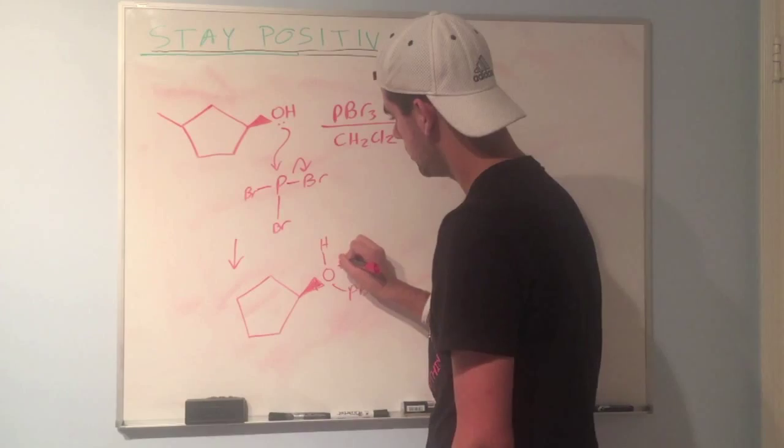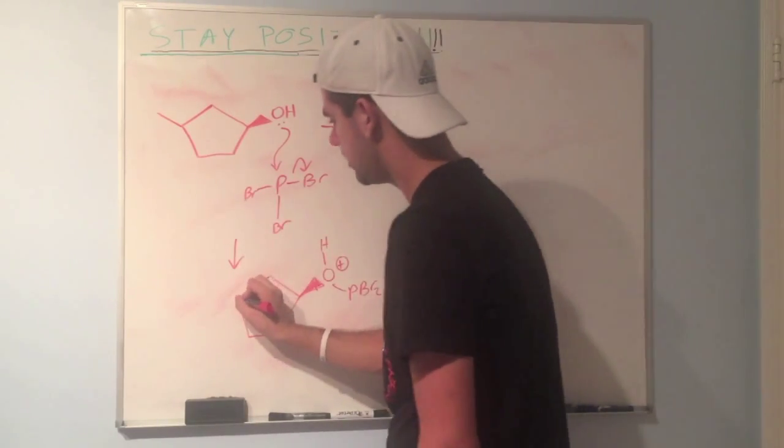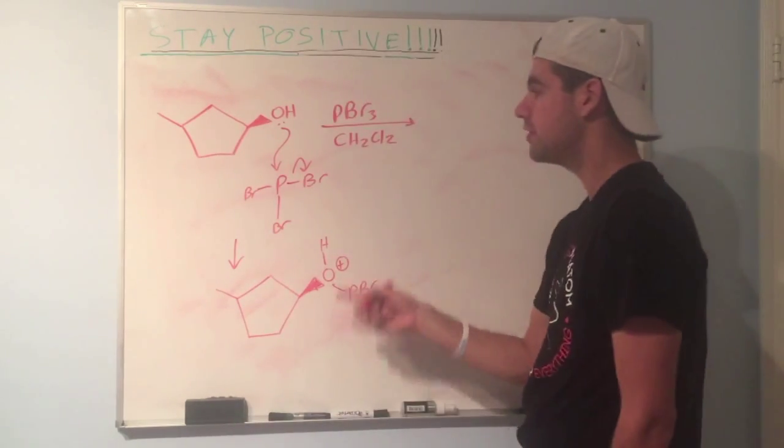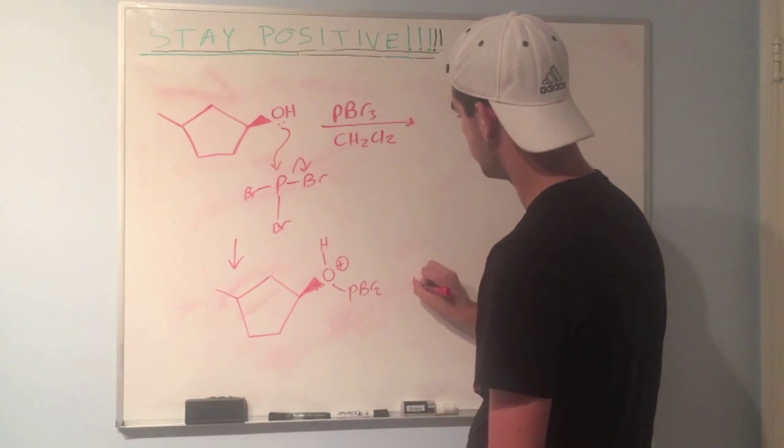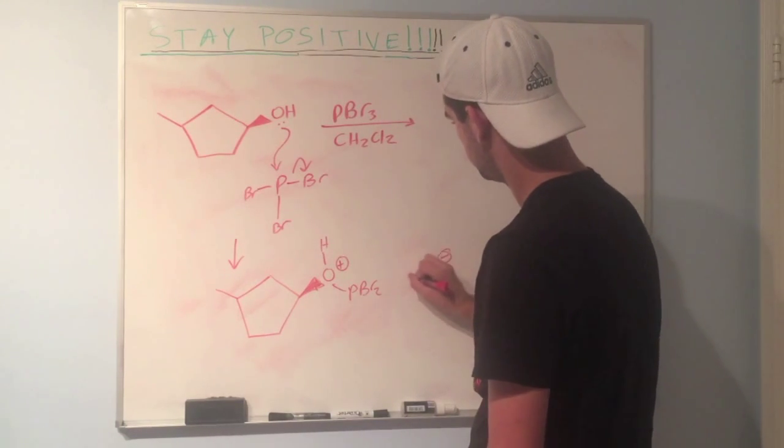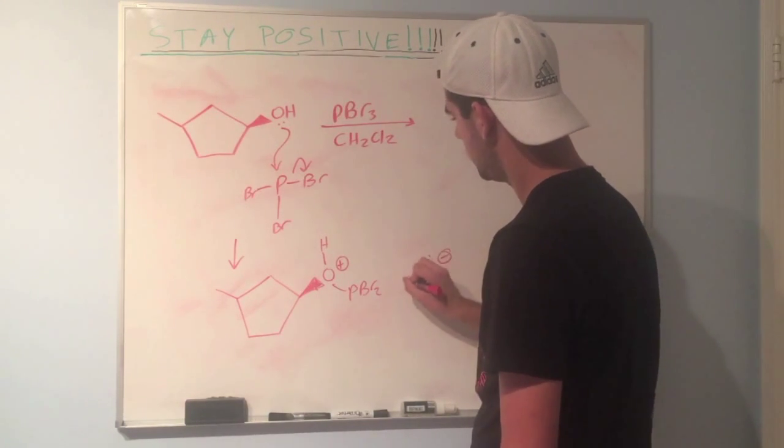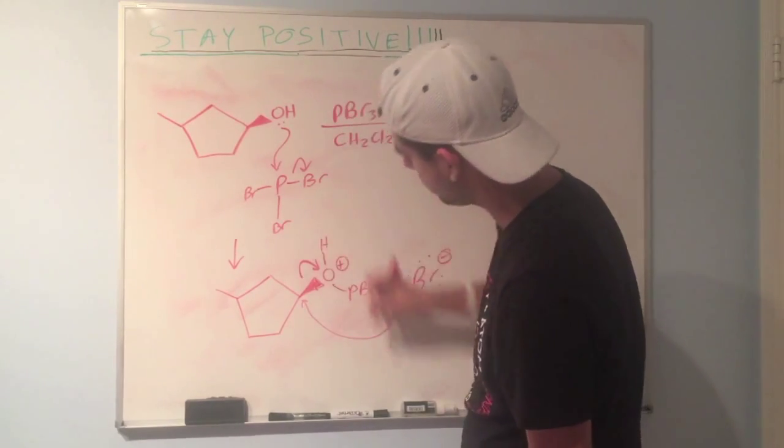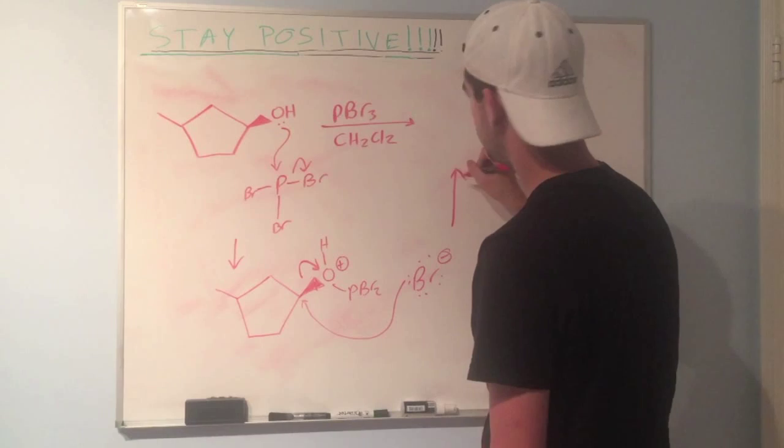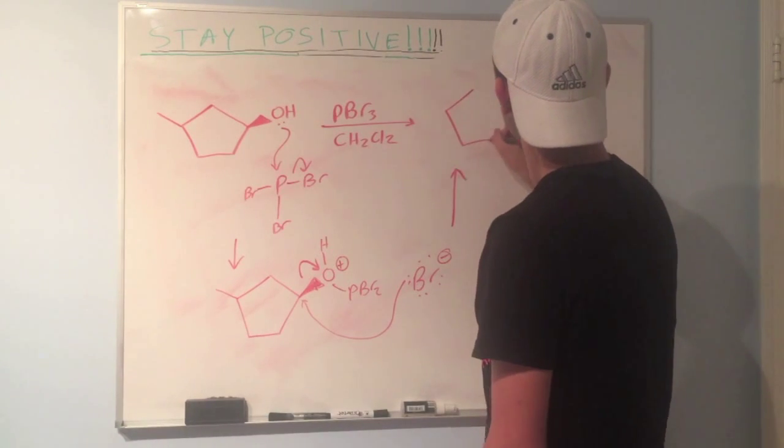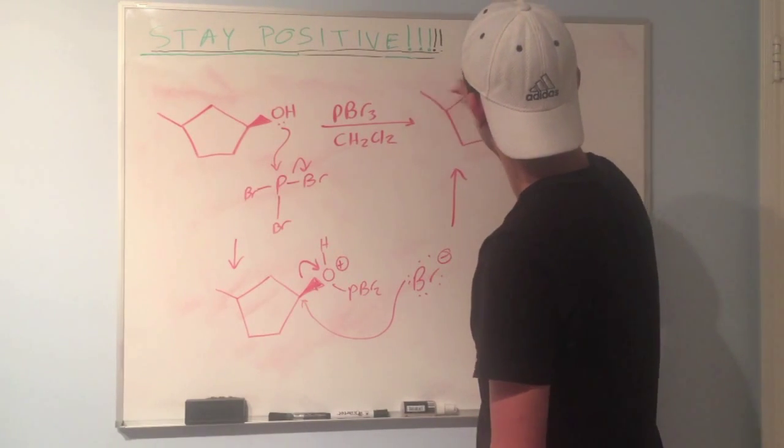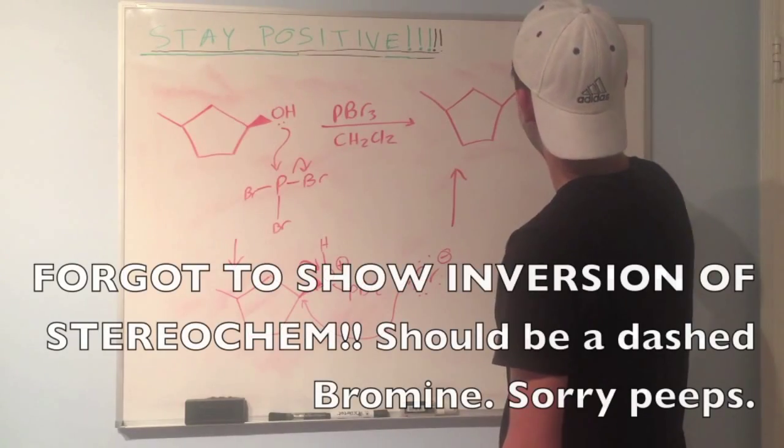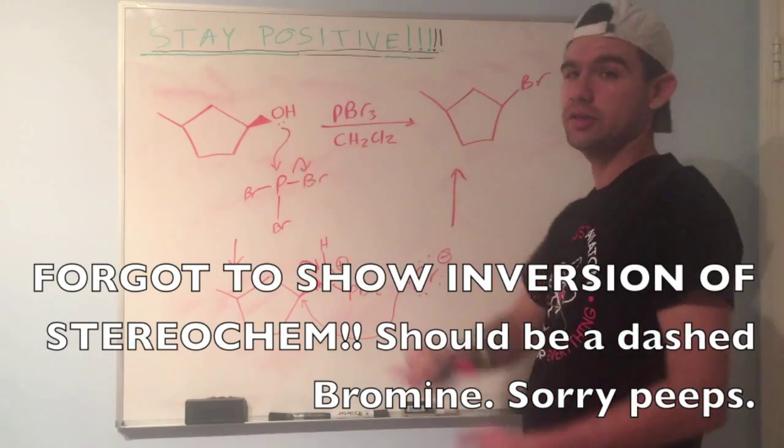So what's going to happen is we have our PBr3. Now this oxygen will grab that PBr3 as one bromine leaves. That'll form oxygen attached to a hydrogen and a PBr2 because one of the bromines left. Oxygen gets a positive charge. Now it's a good leaving group. We have Br minus floating around the solution. It's going to attack at the electrophilic site, kick off the good leaving group, and give us our answer. And there you go. A bromine replaced an alcohol.